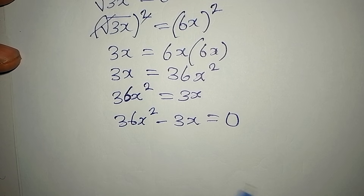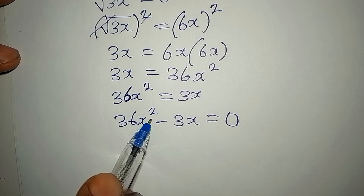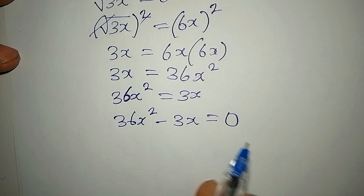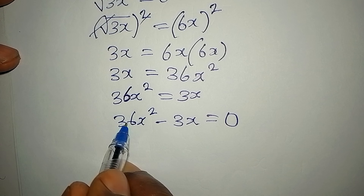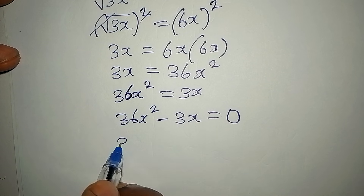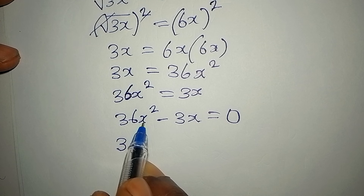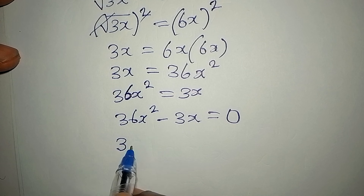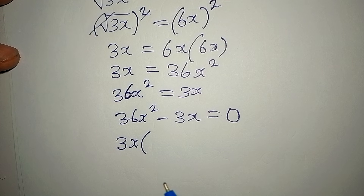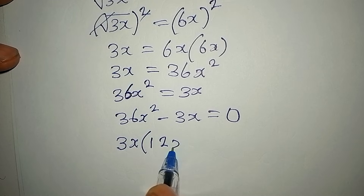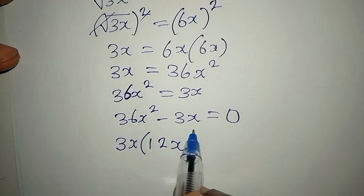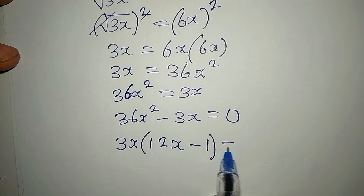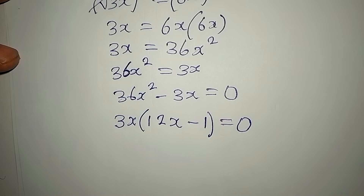Those are the three things that make a quadratic equation: the variable x, the power 2, and the equal sign. We can use the factorization method here because 3 is a factor of both 36 and 3, and x is also common, making 3x the common factor. Factoring out 3x gives us 3x times (12x minus 1) equals 0.